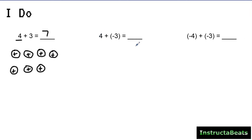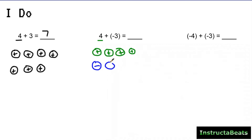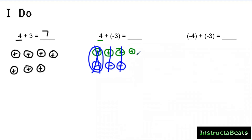Let's take a look at example two — I'll do this one in green. I'm starting with four positive charges, and then I want to add three negative charges directly underneath. I'm lining them up, and you can see a positive and a negative right here — that's going to cancel each other out. I can cancel this positive and negative, this positive and negative, and I'm left with one positive. So four plus negative three would be positive one.